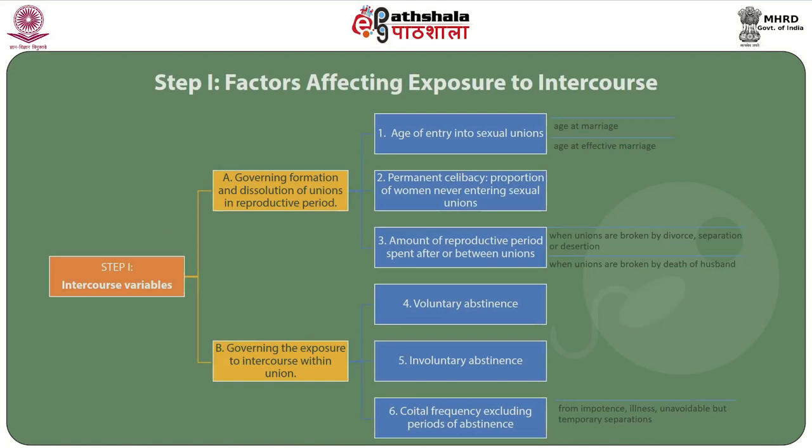Let us consider the 11 points by Davis and Blake. First, age of entry into sexual union. Second, permanent celibacy — that is, the proportion of women who never had a sexual union. Third, amount of reproductive period spent after or between unions. Fourth, when unions are broken by divorce or separation. Fifth, when unions are broken by death of husband. Sixth, those governing the exposure to intercourse within union. Seventh, voluntary abstinence. Eighth, involuntary abstinence from impotency, major illness or unavoidable but temporary separation. Ninth, coital frequency excluding periods of abstinence.